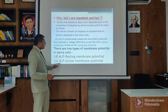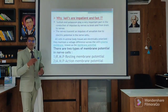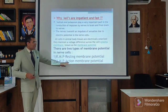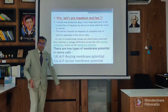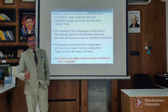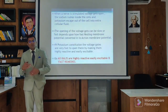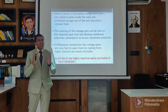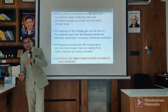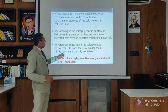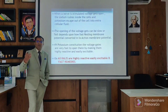When depolarization occurs in the resting membrane potential, chemical changes happen. This activates the action membrane potential, in which sodium goes inside and potassium goes outside. When the nerve is stimulated, the voltage gates open, sodium rushes inside into the cell, and potassium escapes out into extracellular fluid. This happens to maintain the electrochemical gradient. The opening of the voltage gates can be slow or fast depending upon how fast the resting membrane potential is converted into action potential.